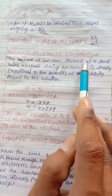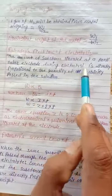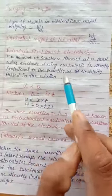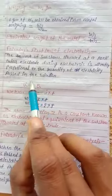Faraday's first law of electrolysis. The amount of substance liberated at a particular electrode during electrolysis is directly proportional to the quantity of electricity passed in the solution.